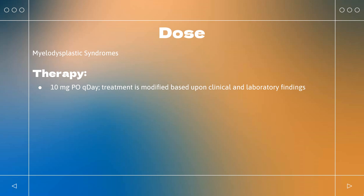Multiple myeloma — Treatment: Indicated in combination with dexamethasone; 25 mg orally once daily on days 1–21 of repeated 28-day cycles, used with dexamethasone. For patients ineligible for auto-HSCT, continue until disease progression or unacceptable toxicity. Dexamethasone schedule: 40 mg orally once daily on days 1–4, 9–12, and 17–20 of each 28-day cycle for the first 4 cycles, then 40 mg orally once daily on days 1–4 every 28 days.